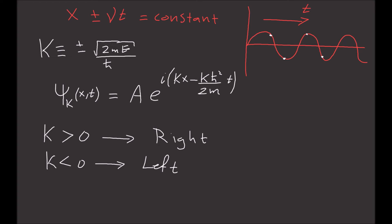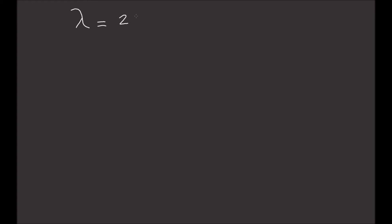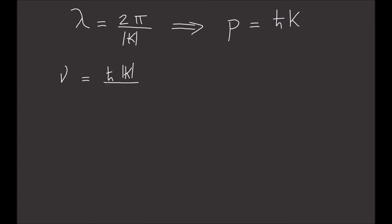Let's review some physics. The wavelength lambda is given by 2π divided by the absolute value of k. We know the momentum is equal to h-bar times k. So the velocity is h-bar times the absolute value of k divided by 2m. Let's call it nu sub q for quantum. This is the quantum velocity.